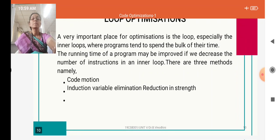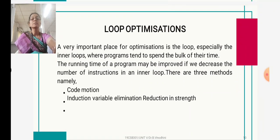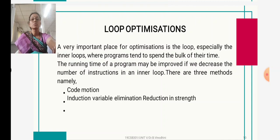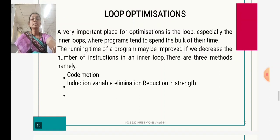Next is loop optimization. Optimization is performed in the loop. When you have an outer loop and an inner loop, most of the program time is spent in the inner loop. If we efficiently code the inner loop, we can improve program efficiency. The running time of a program may be improved if we decrease the number of instructions in the inner loop. There are three methods of loop optimization: code motion, induction variable elimination, and reduction in strength.